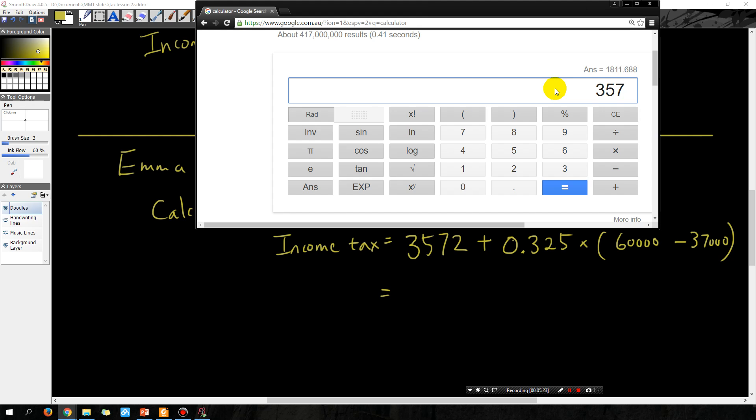$3,572 plus 0.325 times bracket, $60,000 minus $37,000, close bracket. And the answer is $11,047.